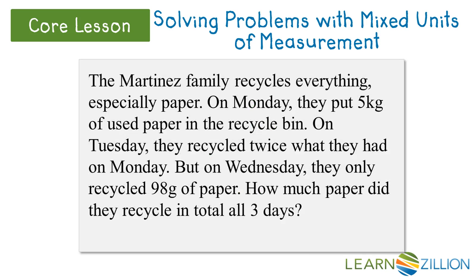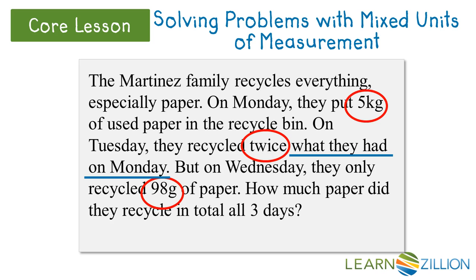Let's look at a real-life problem. The Martinez family recycles everything, especially paper. On Monday, they put 5 kilograms of used paper in the recycle bin. On Tuesday, they recycled twice what they had on Monday. But on Wednesday, they only recycled 98 grams of paper. How much paper did they recycle in total all three days? First, we need to make sure we understand what the problem is asking. Let's pick out the important information: 5 kilograms on Monday; Tuesday, they recycled twice what they did on Monday; and on Wednesday, they recycled 98 grams. We want to convert all measurements to the smallest unit, which in this case is grams.